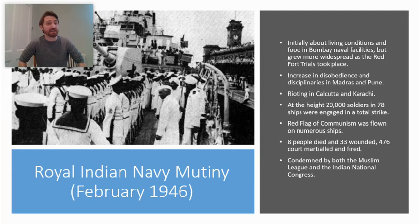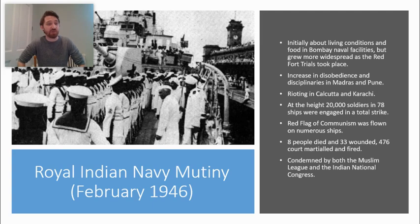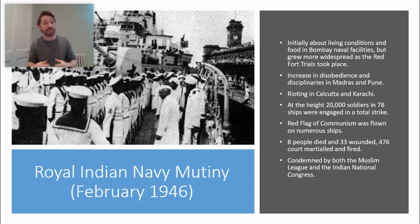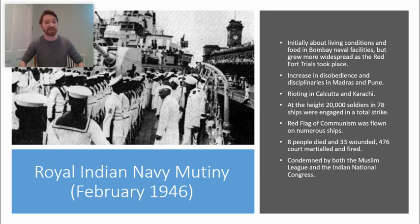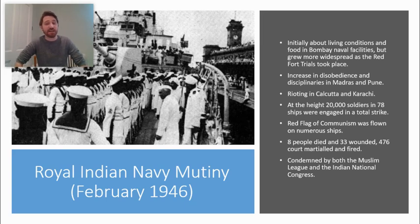Early in the next year, in February 1946, and in part a response to the trials that were taking place, Britain started to lose control of the Indian Navy. There had been some discontent in the Indian Navy for some time, with issues stemming back to the Sepoy Rebellion, where Indian nationals in the British Army were not given the same quality resources or living conditions. Discontent had been rising throughout the war, and you began to get naval rioting, disobedience, and outright rebellion happening across 78 ships involving 20,000 soldiers. They took control of the ships and refused to listen to their white superiors. This ended up in eight people dying, 33 people being wounded, and 476 court marshals.